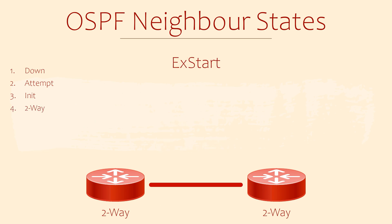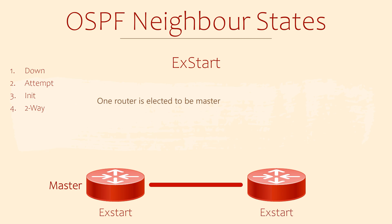Now the routers need to start sharing topology information. In the ExStart state, one router in each network segment is chosen to be the master. This is the router with the highest router ID, which is not necessarily the DR. The master router is the one that gets to talk first — it initiates the exchange of routing information and is in charge of synchronising databases with other routers.